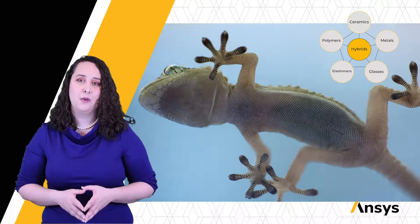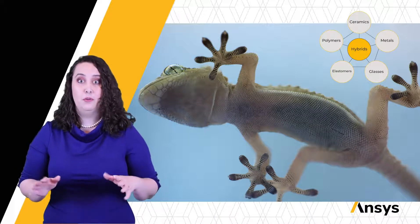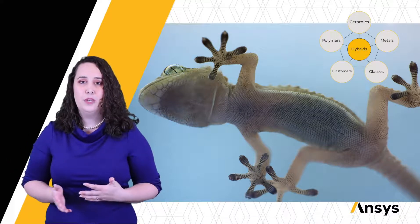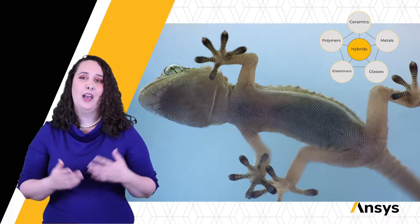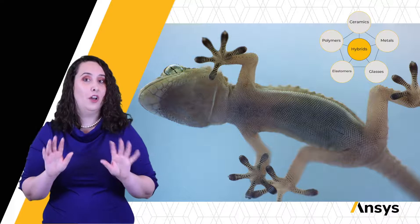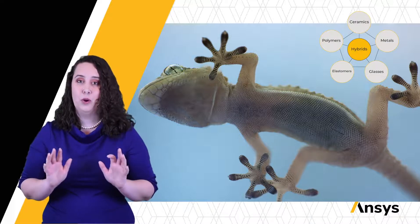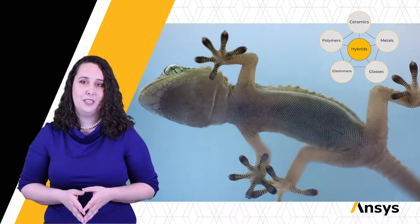Take the pads on a gecko's feet, for example. They're able to scale plate glass windows with no extra help. By understanding how the skin on the pads of the gecko's feet is formed, we might be able to make a similarly synthetic sticky material.